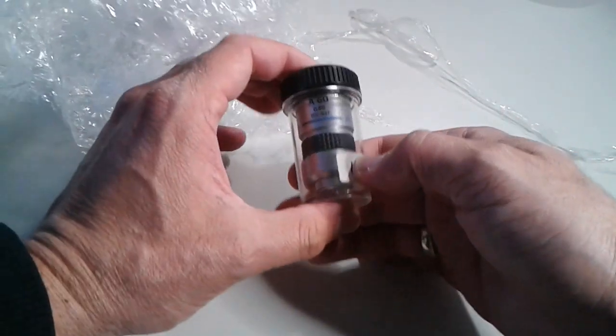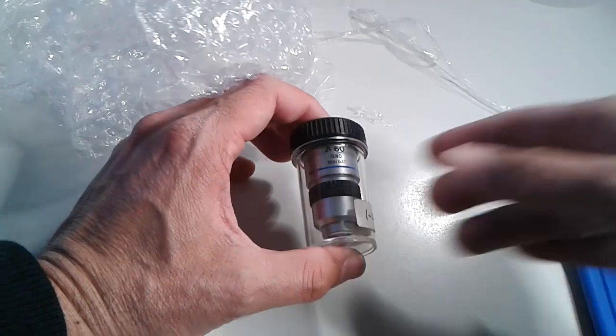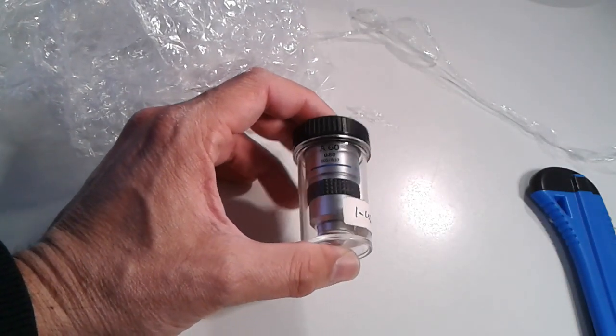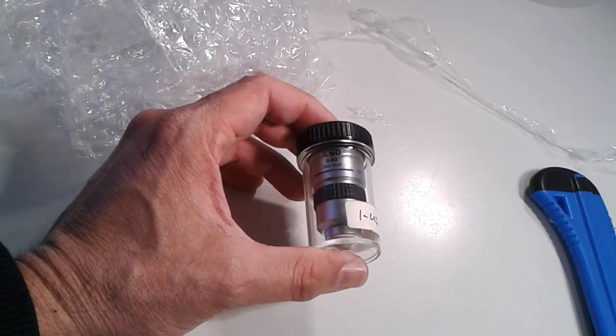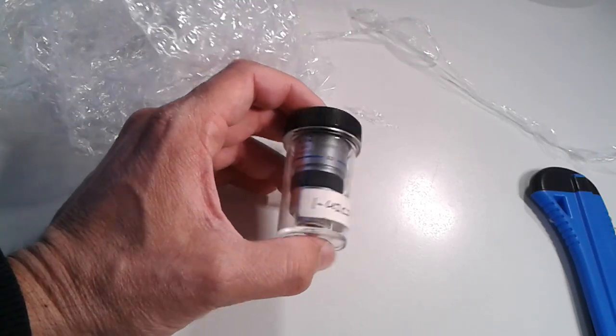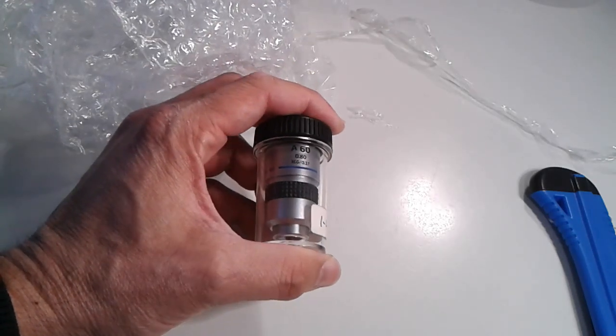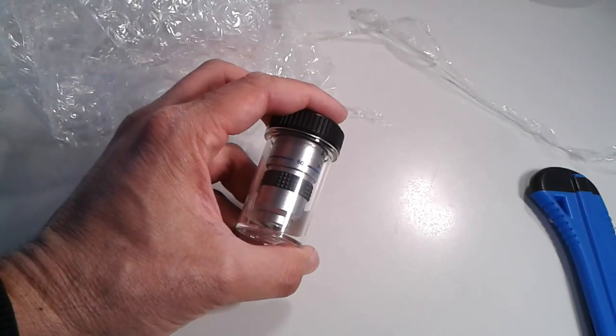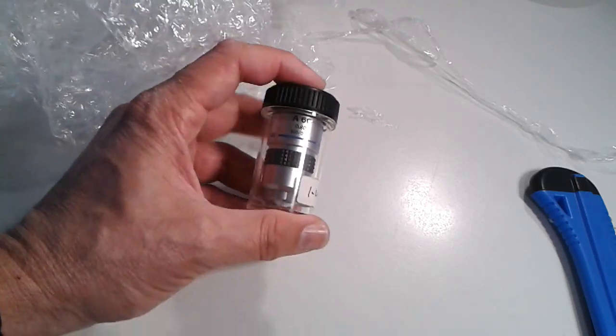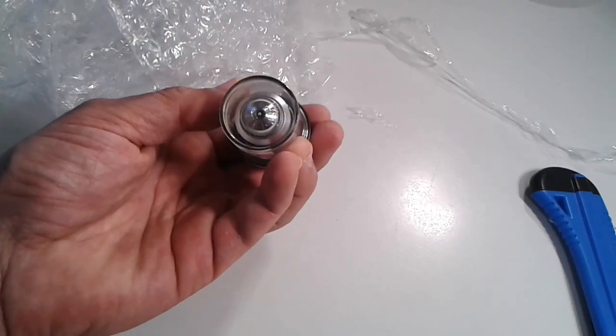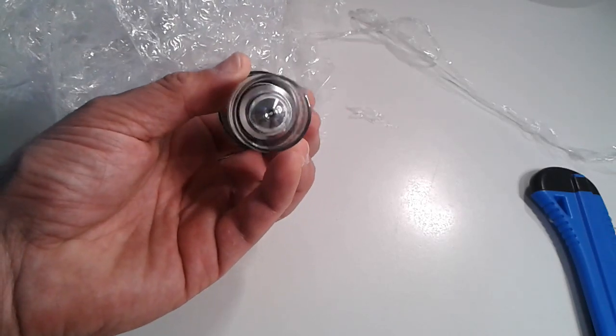Here it is. I present an Olympus A60x achromatic objective, dry objective, and that is the last one that I needed. And now my microscope has all Olympus objectives all the way from 4x to 60x. And yeah, I hope that it works fine.